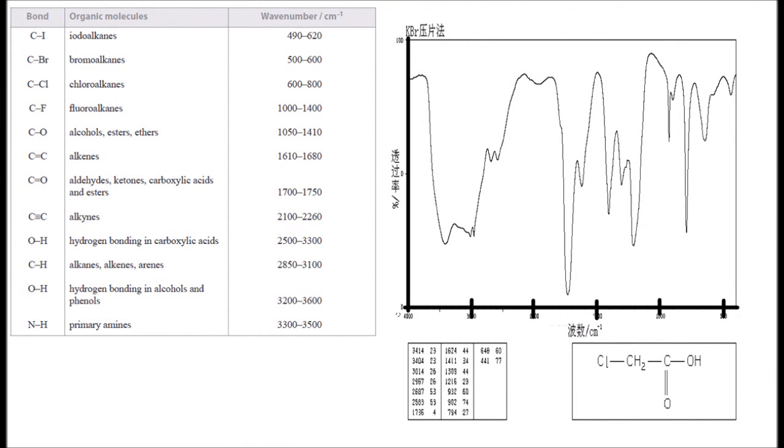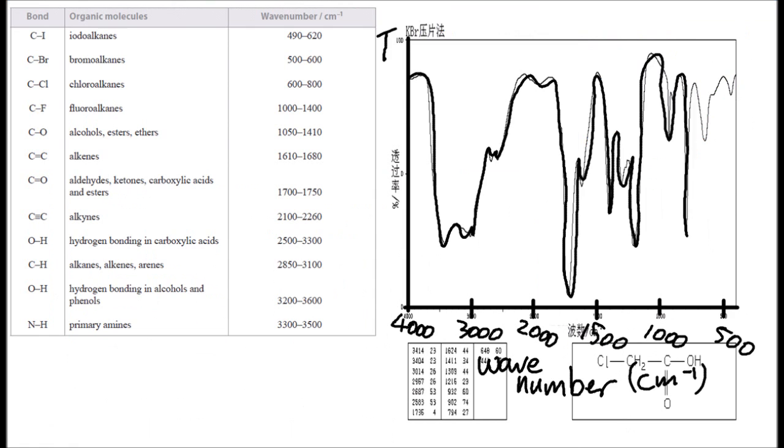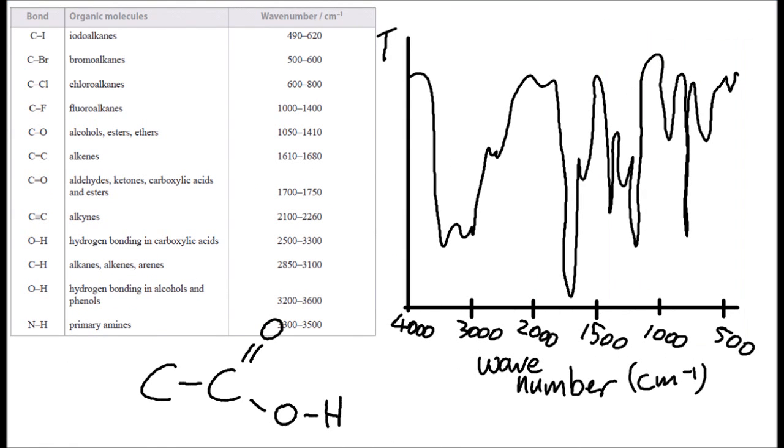But now an easier way to do it is if I give you the actual molecule, and then you can work out which peak is which. So let's do that for chloroethanoic acid.